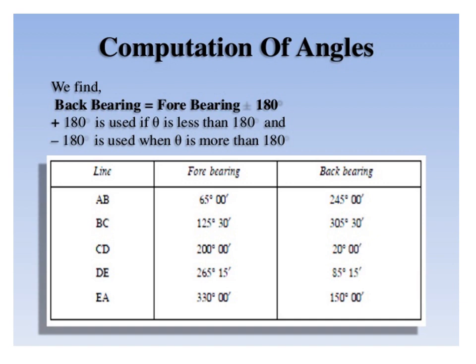For line BC with fore bearing 125 degrees 30 minutes, since it is less than 180 degrees, add 180 degrees to get the back bearing. For line CD the fore bearing is 200 degrees, which is greater than 180 degrees, so subtract 180 degrees to get back bearing 20 degrees. For line DE with fore bearing 265 degrees 15 minutes, subtract 180 degrees to get the back bearing. For line EA with fore bearing 330 degrees, since it is greater than 180 degrees, subtract 180 degrees to get back bearing 150 degrees.